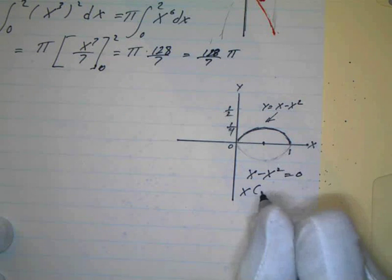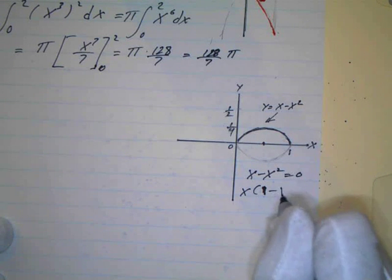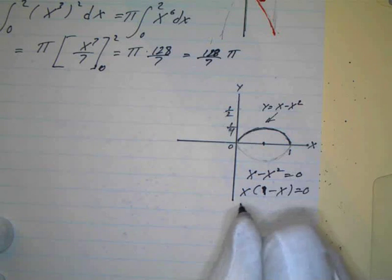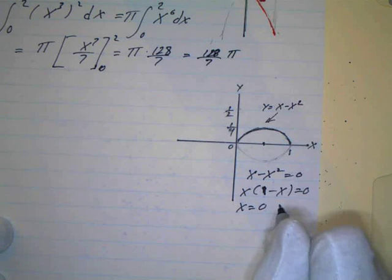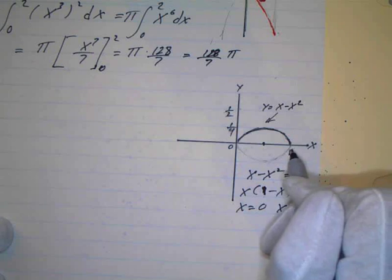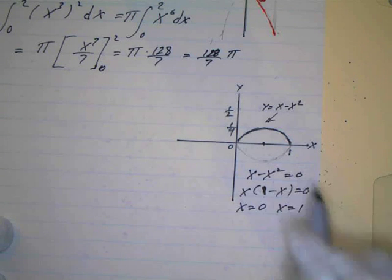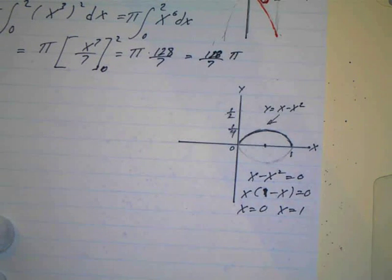If I factor out an x, I get 1 minus x equals 0. So either x equals 0 or x equals 1. So that's how I got the graph here. And I put the halfway point here, I got 1/4. So I had to change my scale so it would look decent. So that's how I could sketch it.